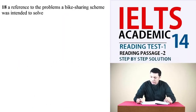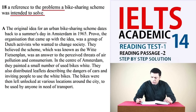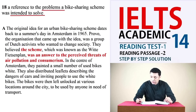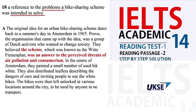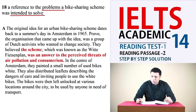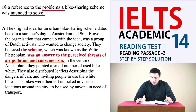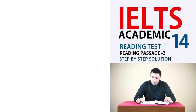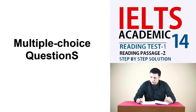'A reference to the problems a bike sharing scheme was intended to solve.' Keywords are 'problems' and 'intended to solve.' From the third and fourth lines of paragraph M, the writer reveals the scheme was an answer to the passive threats of air pollution and consumerism, meaning the intention of the bike sharing scheme was to solve the problems of air pollution and consumerism. The answer is M.